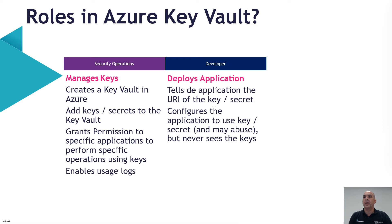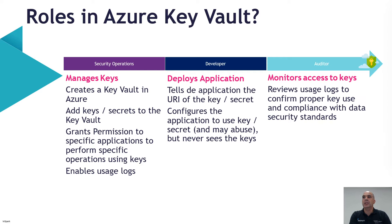The second role is the developer. The only thing the developer needs to know is the URI of the key or secret. That URI can be integrated into the application and the developer can use the secret without ever seeing its value — the connection string, the username, the password. The last role is the auditor. The auditor can access and monitor the keys, review logs to check if keys are used properly, and ensure they are compliant with the security standards within your company.